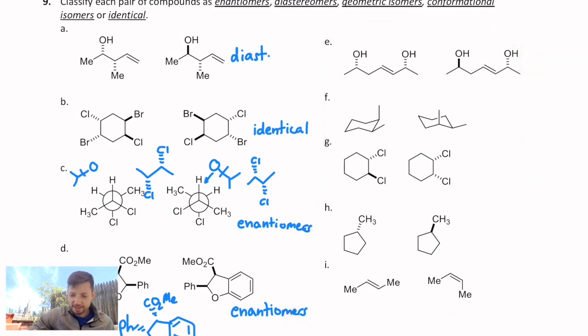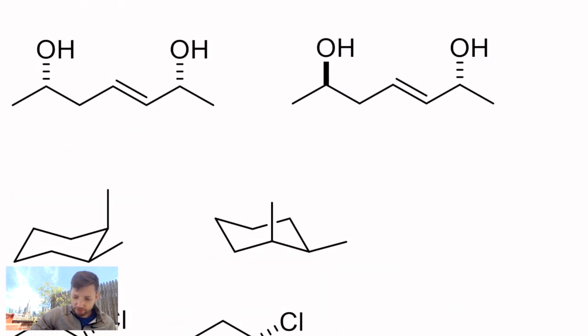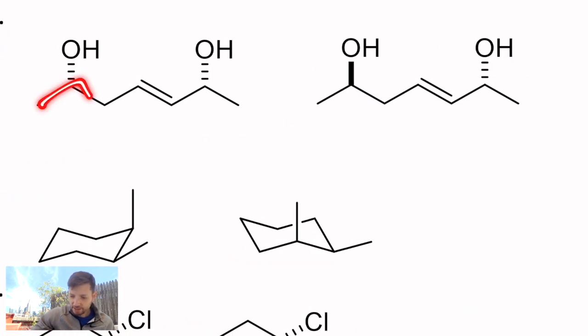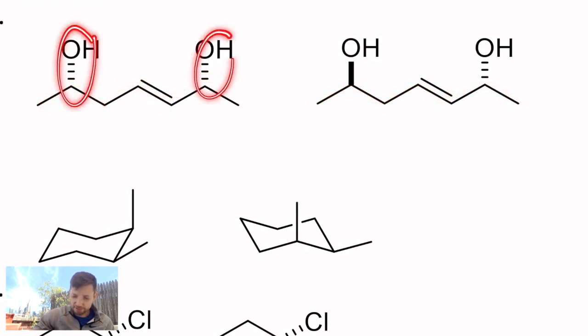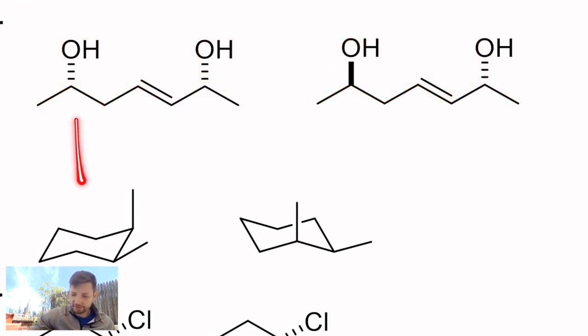Okay, for E. E is two molecules that are drawn in the same fashion, and I have two asymmetric carbons. One of them has been inverted. The other one has stayed the same. That's a red flag for diastereomers.